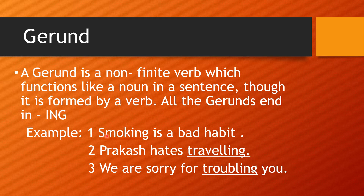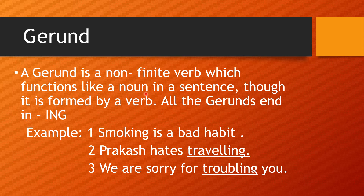Generally, the function of a noun is identified by asking the question 'what' and getting an answer. 'Smoking is a bad habit' — what is a bad habit? Smoking. 'Prakash hates travelling' — Prakash hates what? Travelling. 'We are sorry for troubling you' — sorry for what? Troubling you. So troubling, travelling, and smoking are gerunds functioning like nouns.